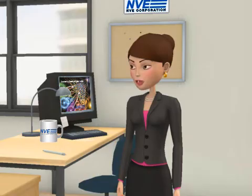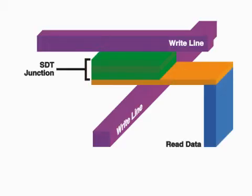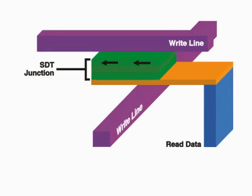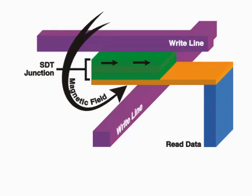In MRAM, data is read as the tunnel junction resistance. Data is stored in the spin polarization of a tunnel junction magnetic layer. The right lines produce magnetic fields that store data bits by setting magnetic spin polarization.